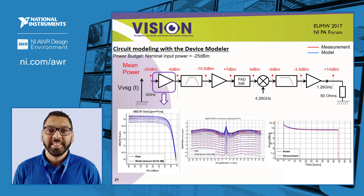The measurements of the first two graphs are part of the data needed to extract the model. The last graph is used to validate the model on a different signal. It shows the comparison of the measurement and the model on a pulse at 1 dB compression gain, and confirms a good representation of the memory effect.